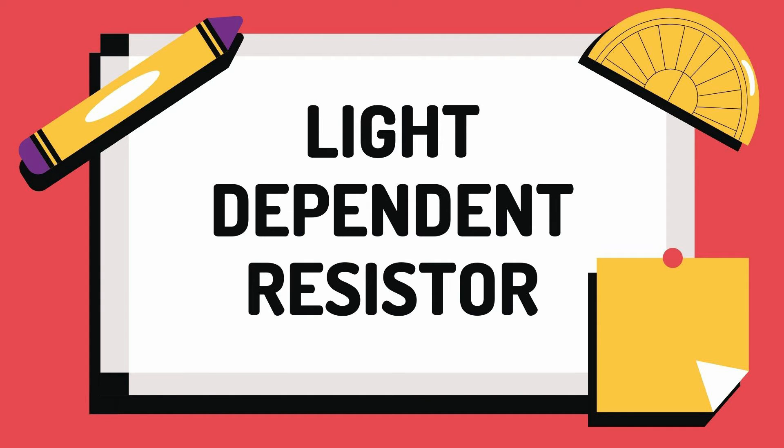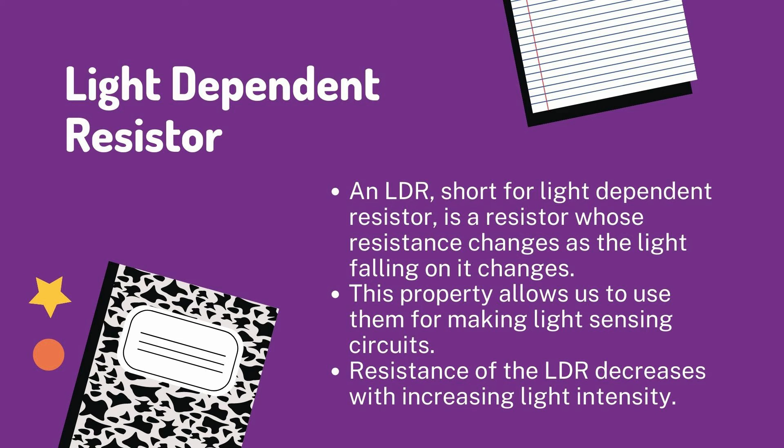The light dependent resistor is also known as LDR. It is a resistor whose resistance changes as the light falling on it changes. This property allows us to use them for making light sensing circuits. The resistance of the LDR decreases with increasing light intensity. In other words, an LDR is a photo resistor that is sensitive to light — when light falls upon it, the resistance changes.